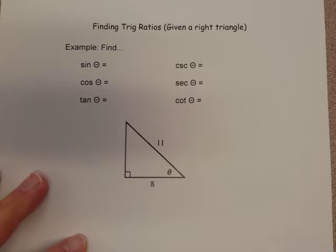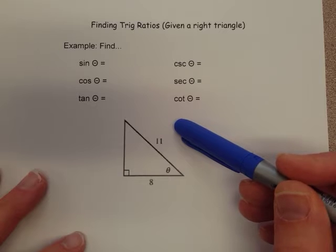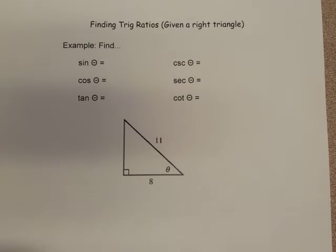Here's the right triangle that we have. Now, you'll notice in this right triangle that we've got 8 and 11, but we don't have this other side here. First of all, it's probably a good idea to label what we have so far.